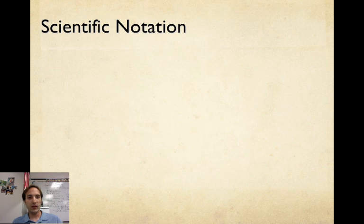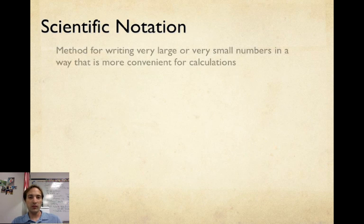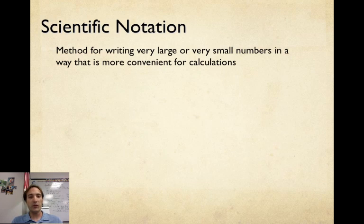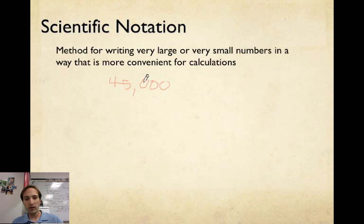So the first topic we have today is scientific notation. Scientific notation is a method for rewriting very large or very small numbers in a way that's more convenient. So what I mean by very large would be something like 45,000. Or if you talk about really small numbers, it could be something like .000098. Again, pretty small, and that's a decimal.